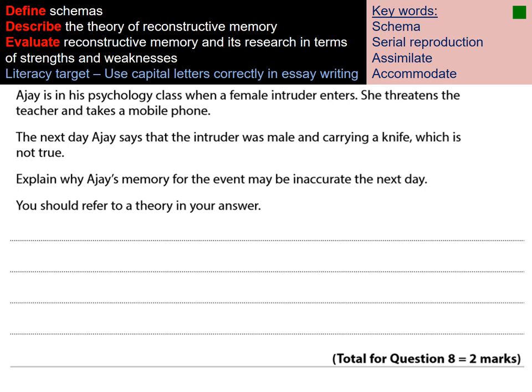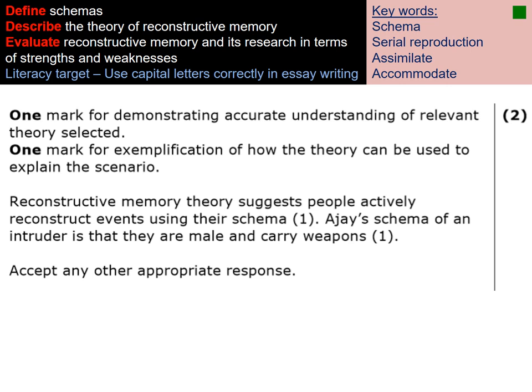Here's an example exam question: AJ is in a psychology class and a female intruder enters, threatens the teacher, and takes a mobile phone. The next day AJ says the intruder was male and carrying a knife. Explain why AJ's memory might be inaccurate. For two marks: reconstructive memory theory suggests people actively reconstruct events using their schema — that's your first mark. Then apply it to AJ: his schema of an intruder may reflect pre-existing experience of intruders being male and carrying a weapon, causing him to change his memory.